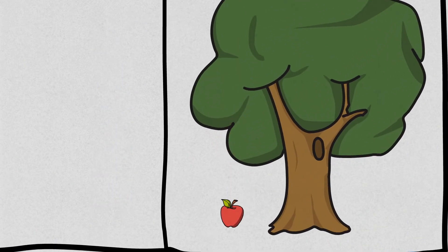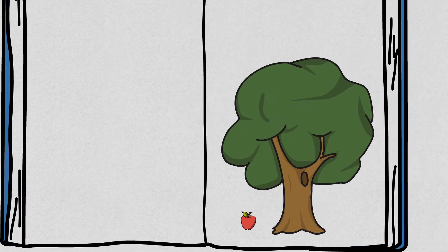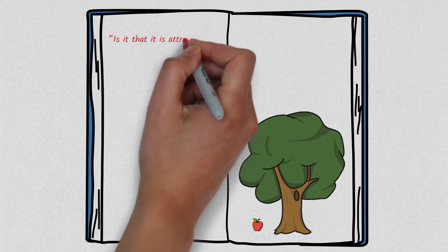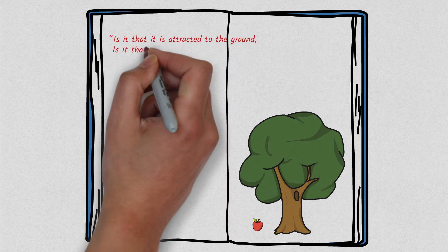When an apple ripens and falls, what makes it fall? Is it that it is attracted to the ground? Is it that the stem withers?